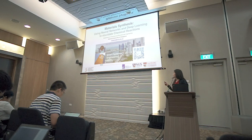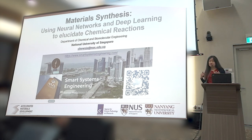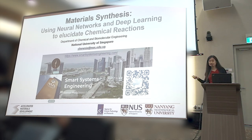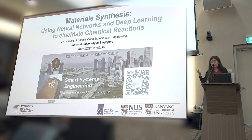Specifically here, I will show how we use neural networks and deep learning to elucidate chemical reactions. I come from the background of chemical engineering. My name is Xiaonan Wang, currently Assistant Professor at NUS in the Department of Chemical and Biomolecular Engineering. We have a research group called Smart System Engineering, with PhD students working on optimization, data analytics, and learning methods. We realized we were doing AI work because we have done a lot of optimization and computing, combining tools in all different ways.